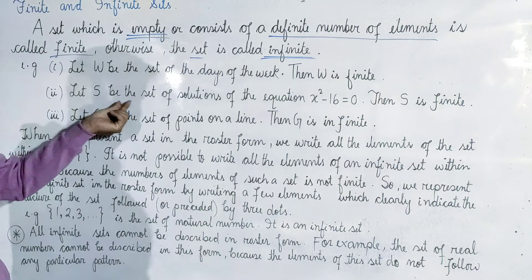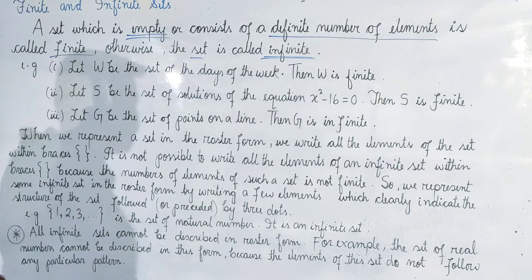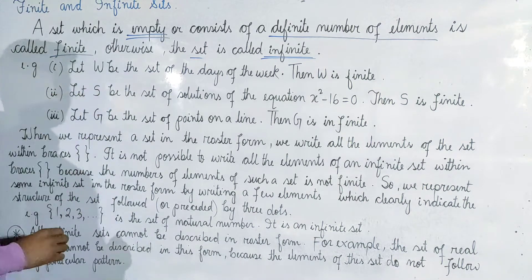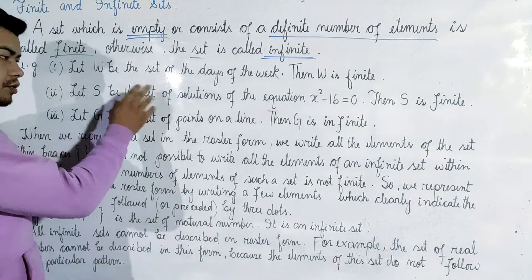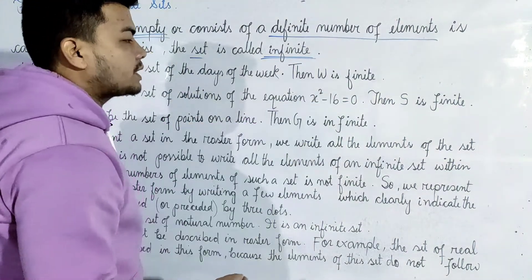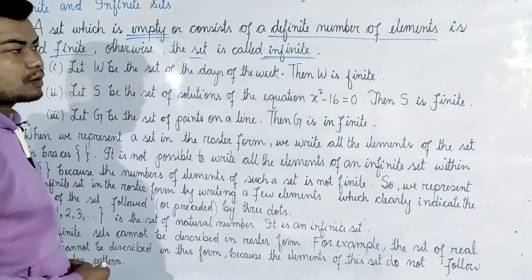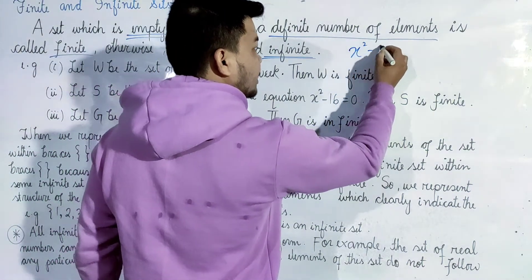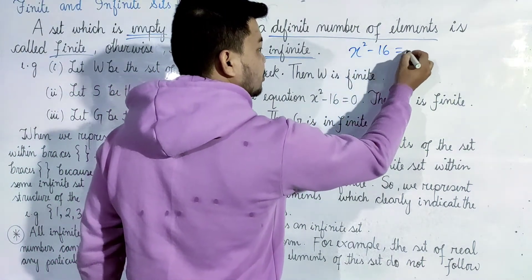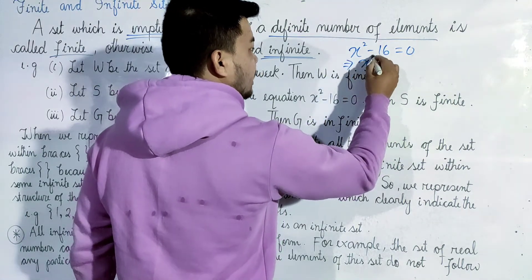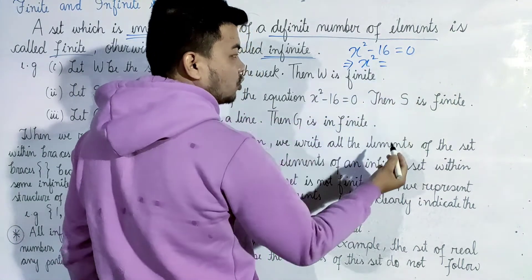Let S be the set of solutions of the equation x squared minus 16 equal to 0. This equation x squared minus 16 equals 0.